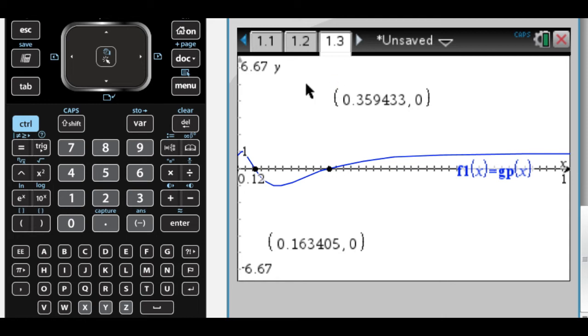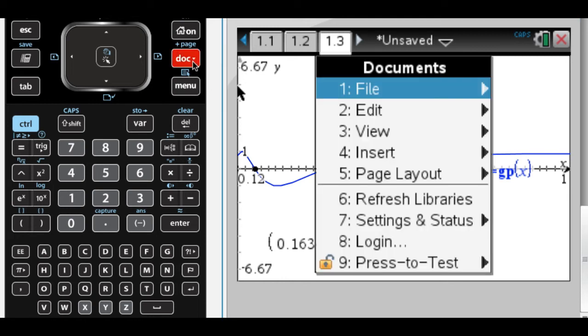What subintervals between 0.12 and 1, if any, is the graph concave down? All right, so let's add a graphing page.